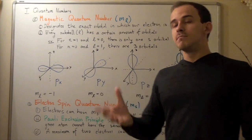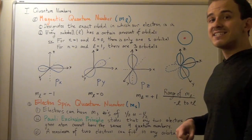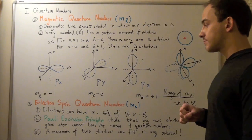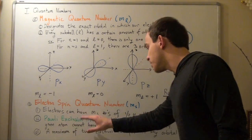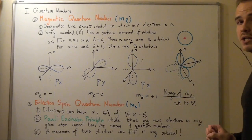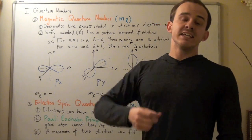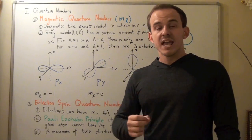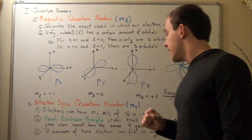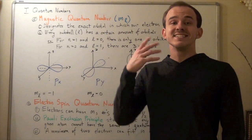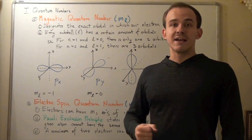The final quantum number is the electron spin quantum number, represented by a lowercase m with subscript s. Every orbital can hold a maximum of two electrons. The Pauli exclusion principle states that no two electrons in any given atom can have the same four quantum numbers — just like each car has a unique license plate. Since each orbital holds two electrons, there are two possible spin values: plus 1/2 and minus 1/2.